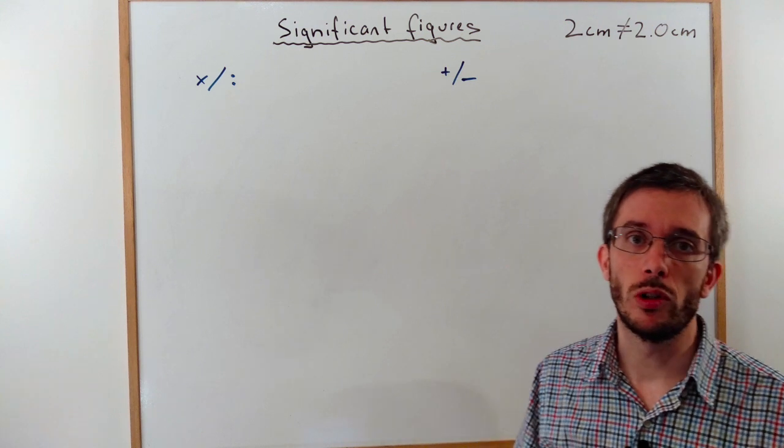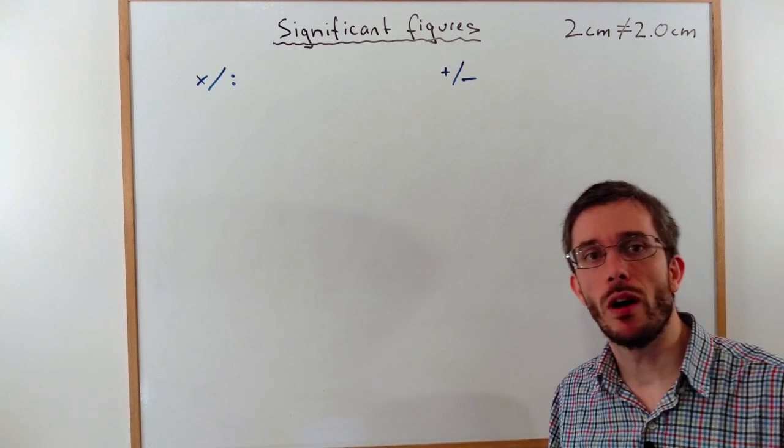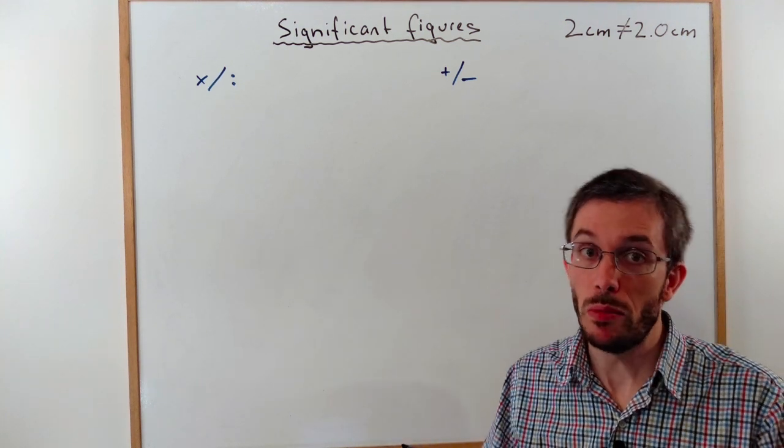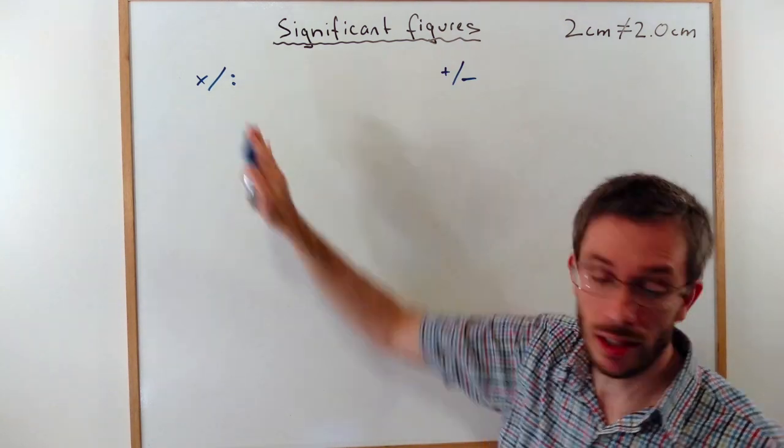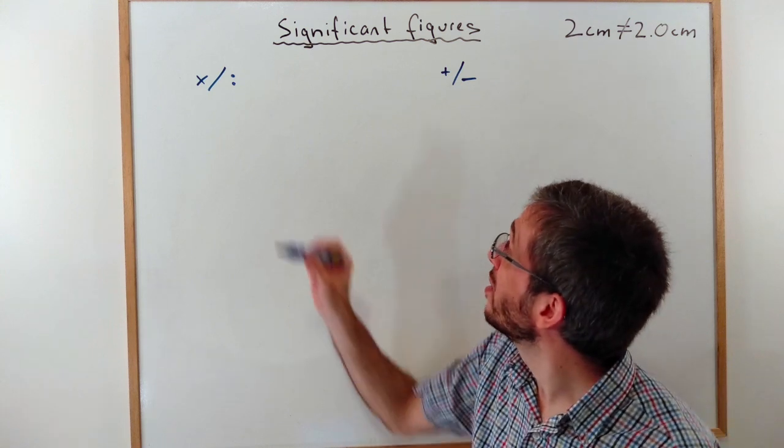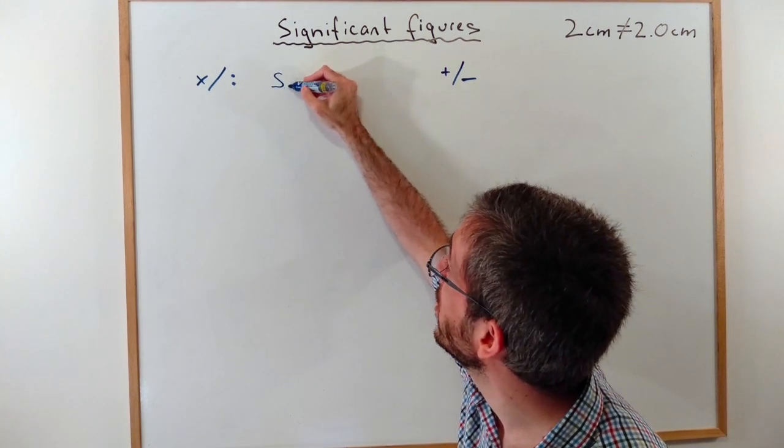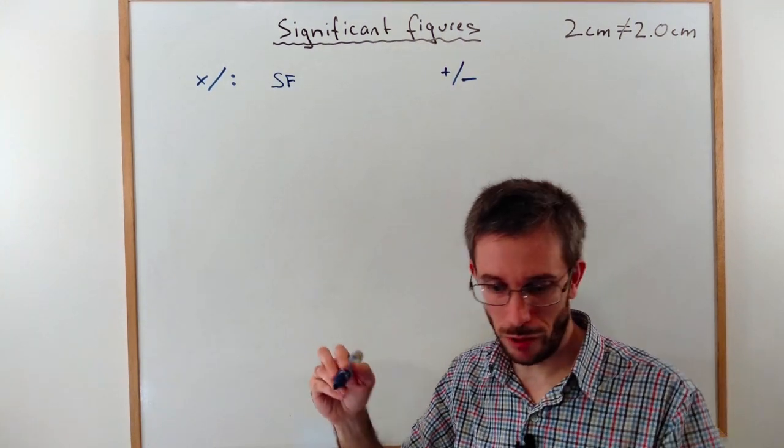There are also some rules to follow if we calculate with numbers that have a limited amount of significant figures. If we multiply or divide numbers, we would use the smallest amount of significant figures. For example,